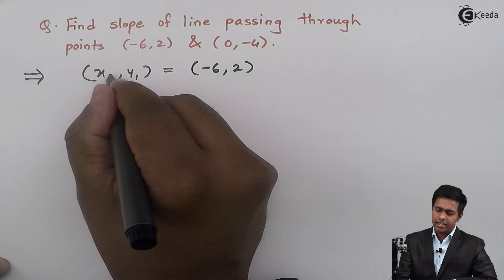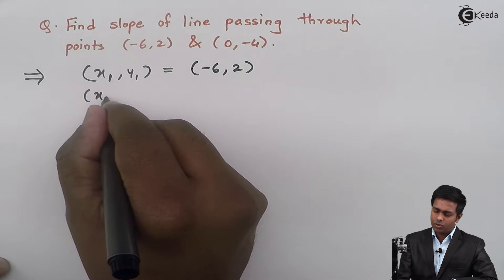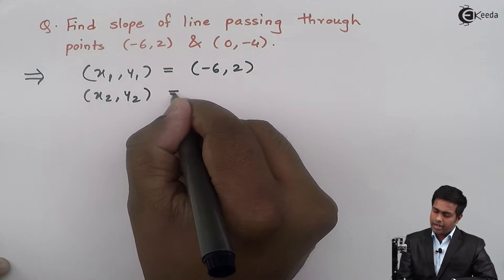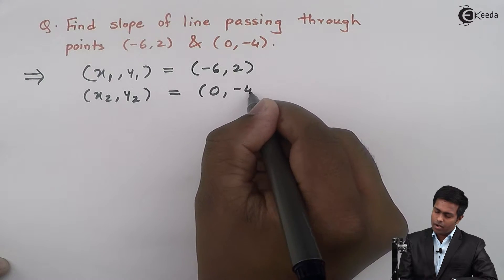Similarly, I will say that the second point is (x₂, y₂) and it is (0, -4).